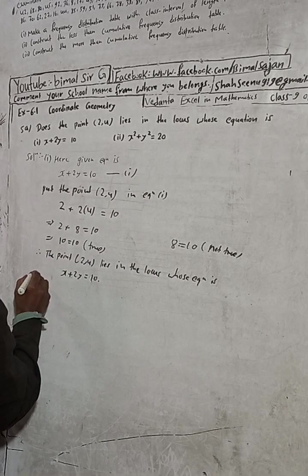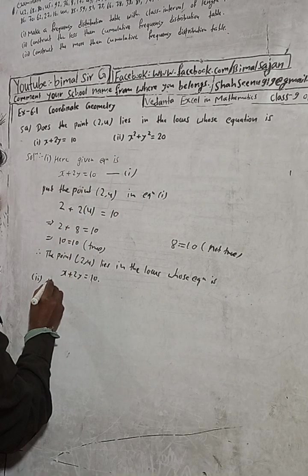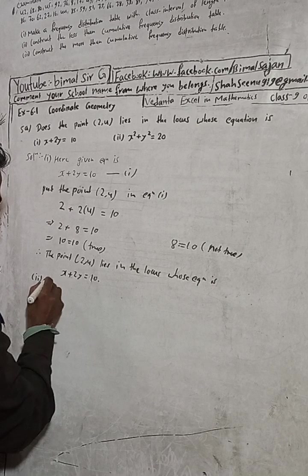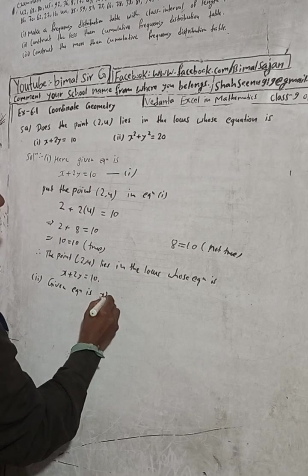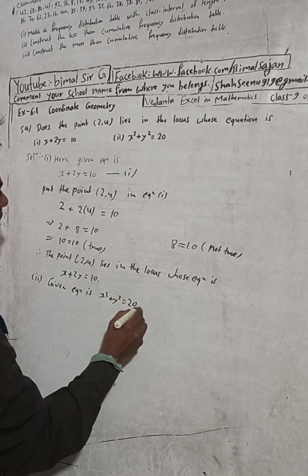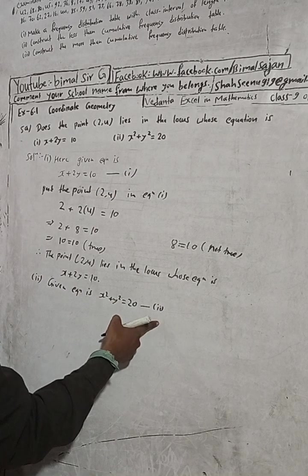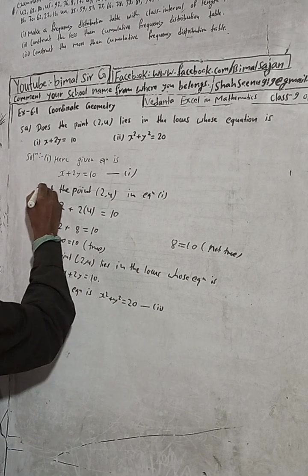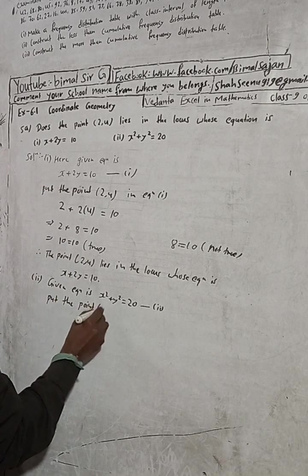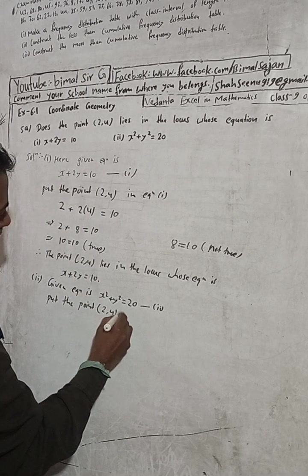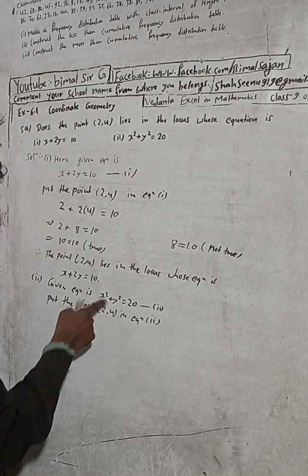Now two, number two. Here given equation is x² + y² = 20. So this is equation 2. Now here same, put the point. Put the point (2,4) in equation 2.